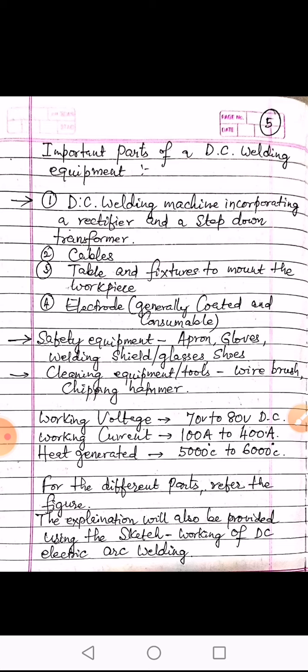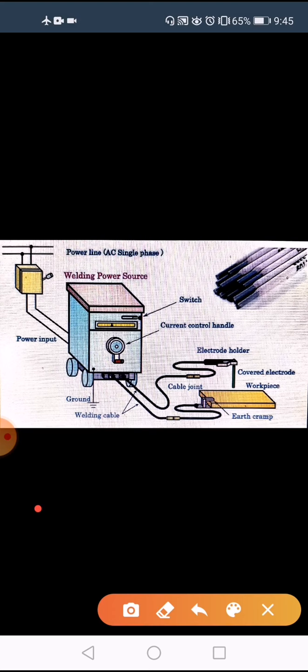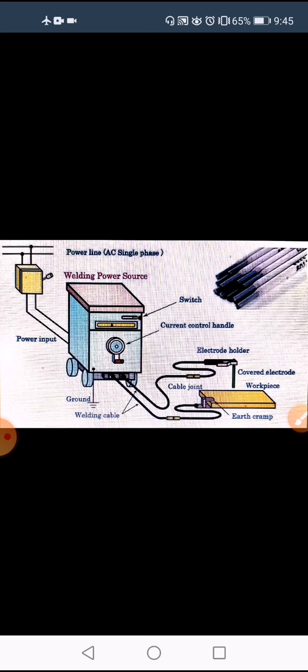We will now look at sketches to understand the equipment mentioned. This is the sketch for AC arc welding. Normally the power supply provided is AC. The main welding equipment — the power source — contains a full-wave rectifier to convert AC into DC, and a step-down transformer, because the normal voltage is about 220 volts or more for a three-phase line.